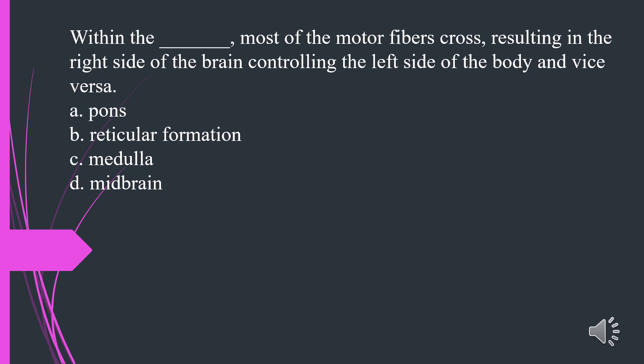Within the what, most of the motor fibers cross, resulting in the right side of the brain controlling the left side of the body and vice versa? A. Pons. B. Reticular formation. C. Medulla. D. Midbrain. The answer is C. Medulla.